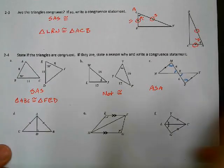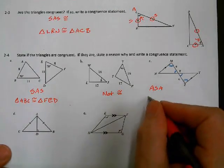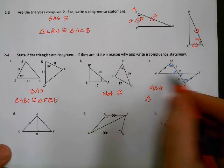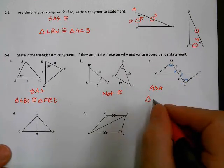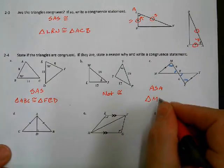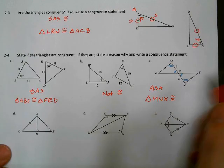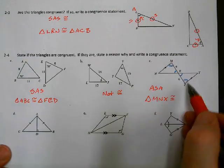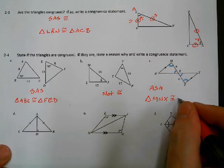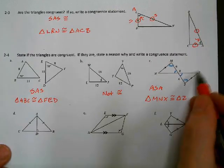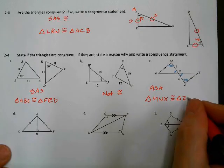So triangle MXN is congruent to triangle ZXY — M goes with Z, N goes with Y, and the vertical angle vertex X corresponds to itself.